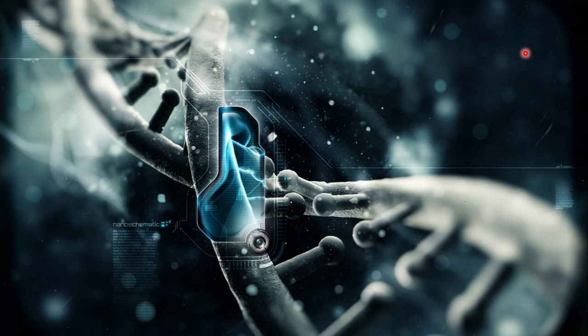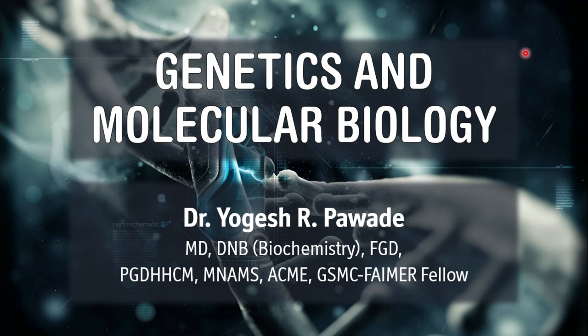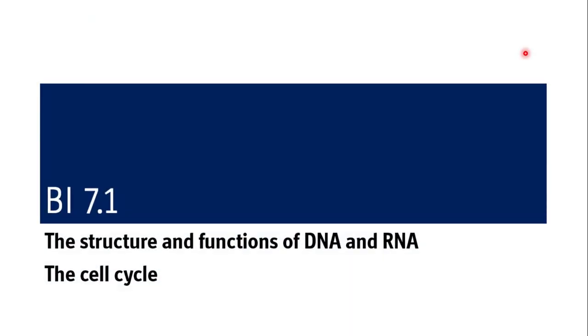Hello everyone, welcome to the fourth session in this lecture series on genetics and molecular biology. I am Dr. Yogesh Poudhe. We have so far covered structure and function of nucleotide, biologically important nucleotides and their clinical significance, and in the third session we covered structural analogues of those nucleotides with their significance. Now coming to the fourth session, which also falls under BI7.1, dealing with the structure and functions of DNA and RNA and the cell cycle.